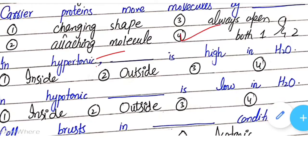In hypertonic solution — the cell shrinks — water moves from inside the cell to outside, because solute outside is high and water inside is high. So in hypertonic, water inside is high and it moves outward.